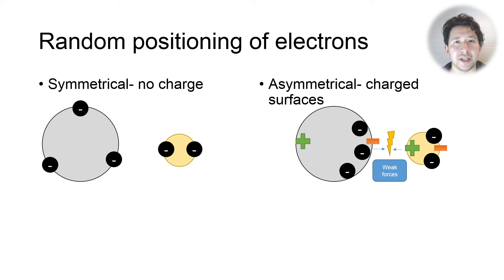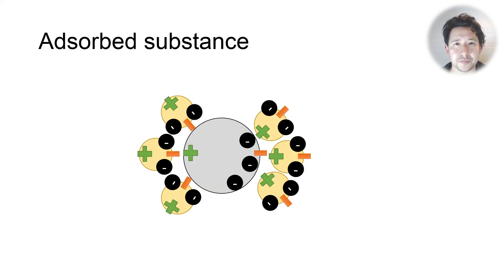That causes adsorption, and that is the process by which charcoal holds toxic substances in the gut and prevents them from being absorbed.